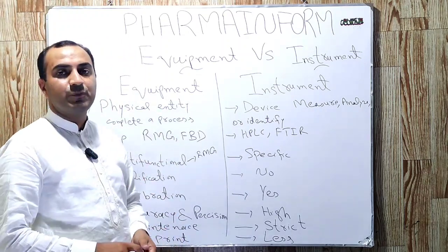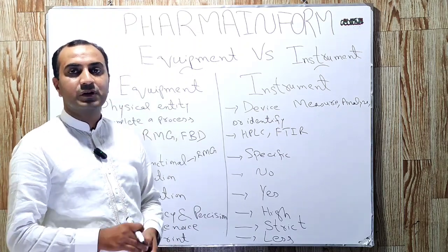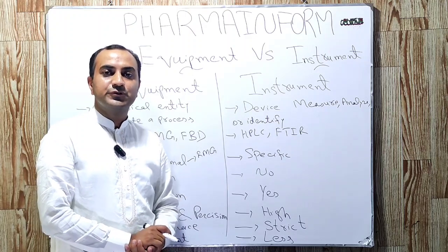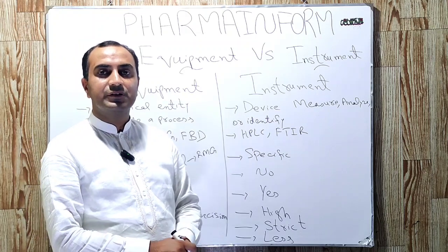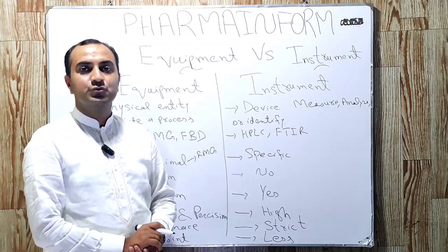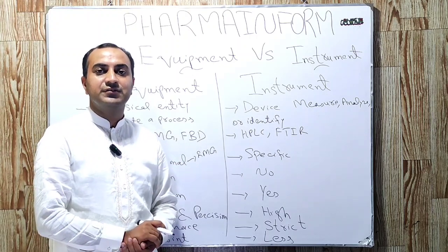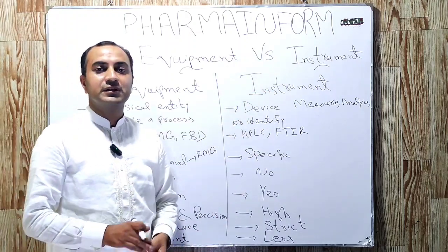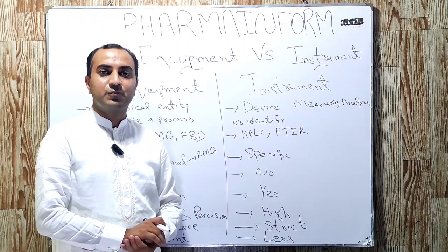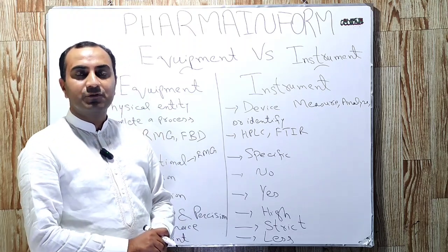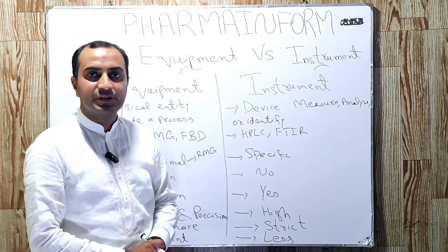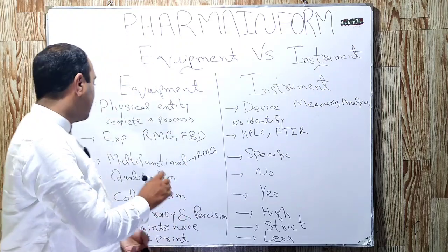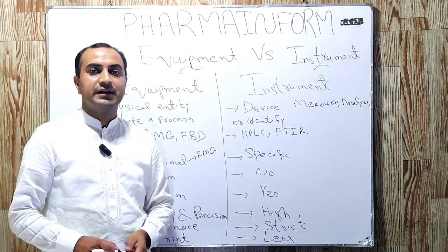Equipment is used for multiple functions — we can perform different functions on a single equipment. For example, a rapid mixing granulator is used for dry mixing and also for wet granulation. When we talk about instruments, they are specific for performing a specific function. For example, a pH meter, which is an instrument, is used only to check the pH.